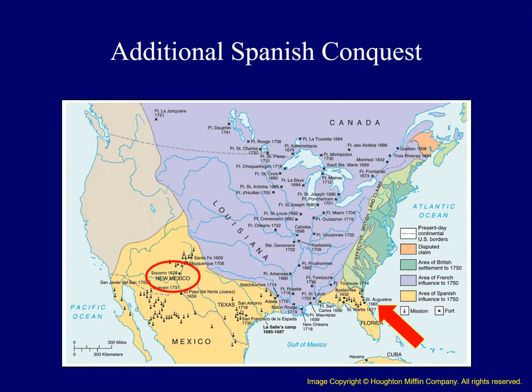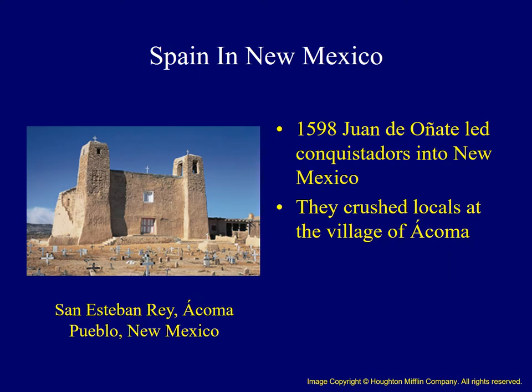The Spanish continued to expand their empire, establishing outposts in different parts of North America. When St. Augustine was established in 1565, it became the first permanent European settlement in what would become the United States. The Spanish also expanded northward from Mexico into what is now New Mexico in 1598. Spanish conquistadors led by Juan de Oñate moved into the upper Rio Grande Valley. The Spanish crushed villagers in the Pueblo of Acoma who resisted — about 800 were killed, women and children were sold into slavery, and surviving men had one foot cut off.